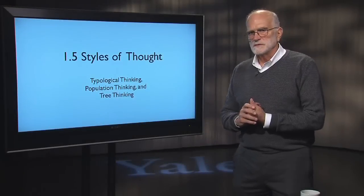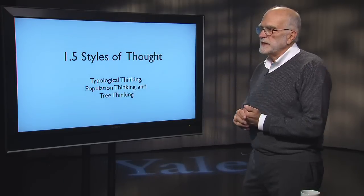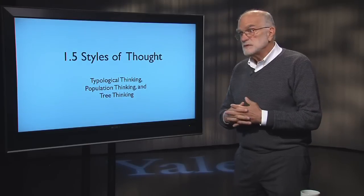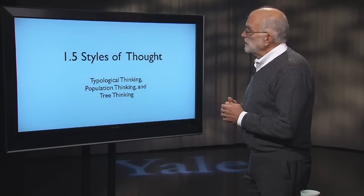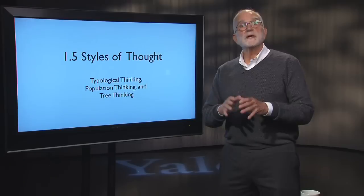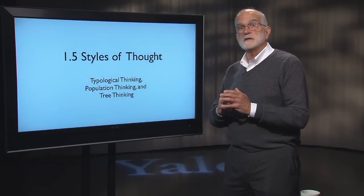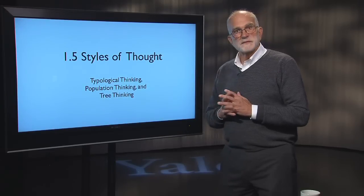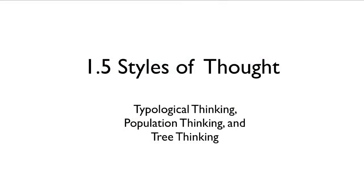One of the issues that arises when people first encounter evolutionary biology is that of the style of thought. There are actually some substantial differences in the way that people think about things, and those are often implicit. The purpose of this lecture is to make that issue explicit so that you can recognize it when you encounter it and understand what's going on. The three different styles of thought are typological thinking, population thinking, and tree thinking.